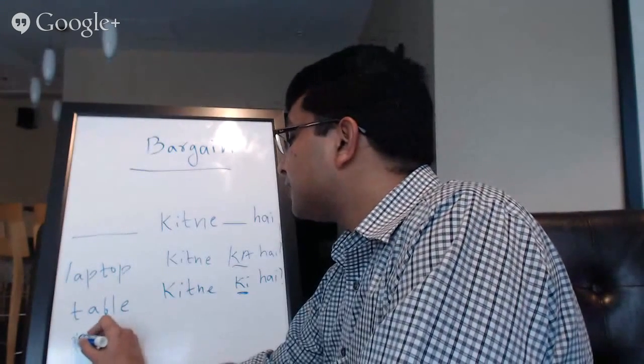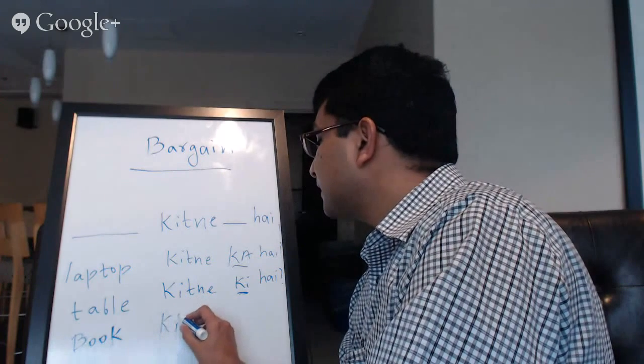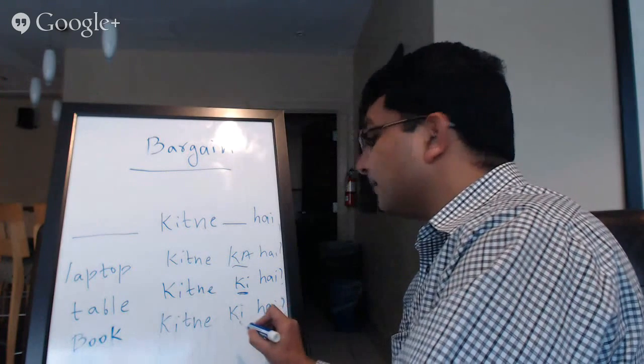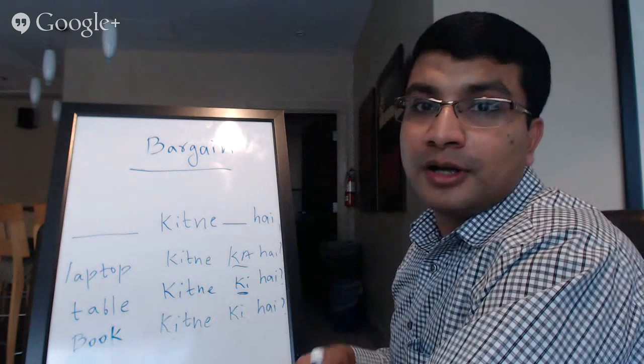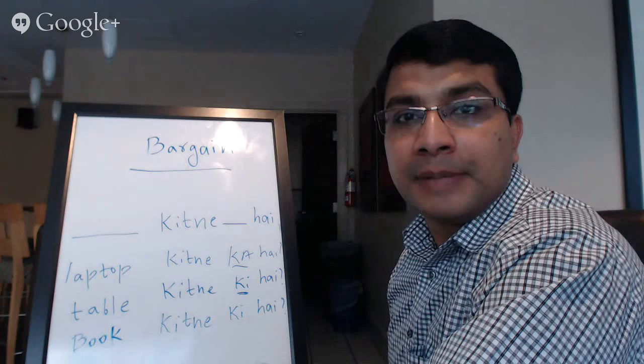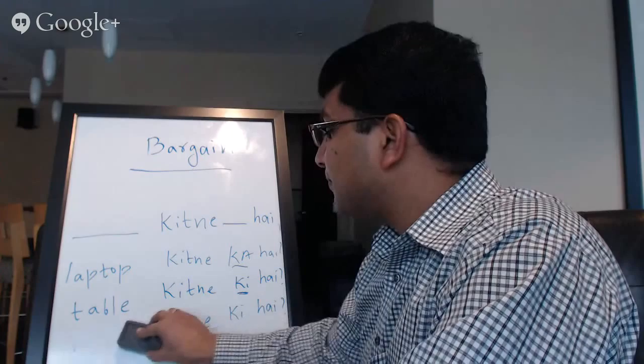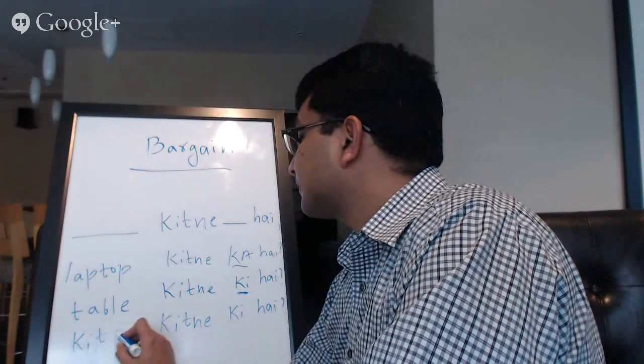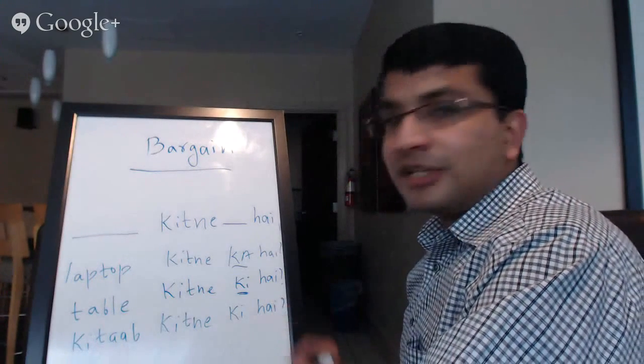Or in this case, which as Dilara mentioned, let's say you are saying, Book Kitne Ki Hai. And Book is again feminine singular. Just to repeat our formula, Book ko Hindi mein kya kehte hai. And the answer would be Kitab. Kitab itne ki hai. Again, Kitab is feminine singular.